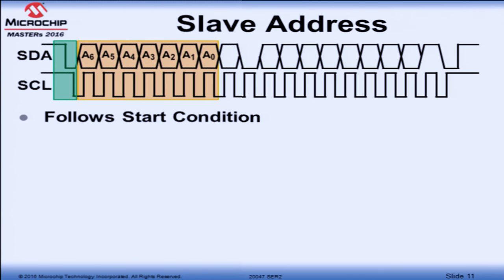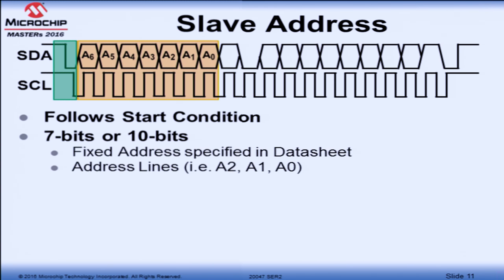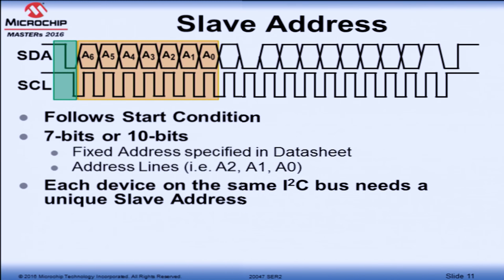The start condition will be followed by the slave address, and it can be 7 bits or 10 bits. For the purpose of this class, we'll be focusing only on the 7-bit addressing. The 10-bit address is fairly new compared to the 7-bit — when they realized they were going to run out of slave addresses, they added three more bits. Each device on the I2C bus should have a unique address. The slave address can be fixed or denoted by address lines A2, A1, A0.